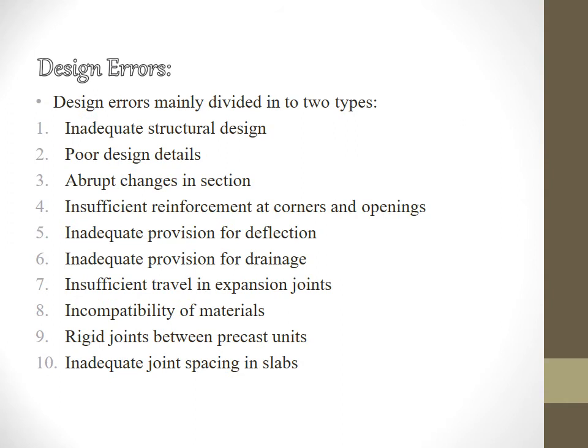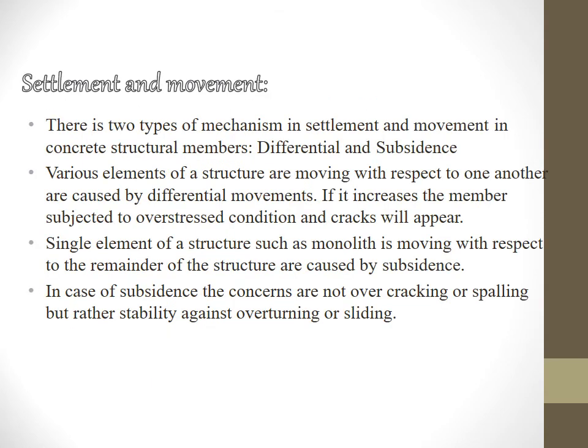Design errors include: inadequate structural design, poor design details, abrupt changes in section, insufficient reinforcement at corners and openings, inadequate provision for deflection, inadequate provision for drainage, insufficient travel in expansion joints, incompatibility of materials, rigid joints between precast units, and inadequate joint spacing in slabs. Settlement and movement has two types of mechanisms: differential settlement and subsidence.